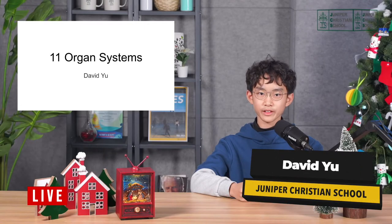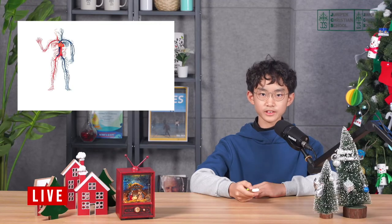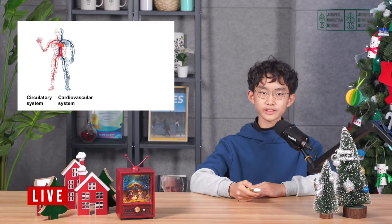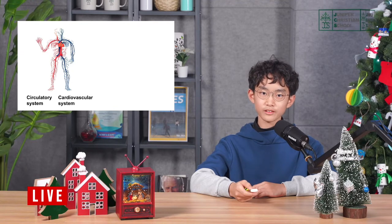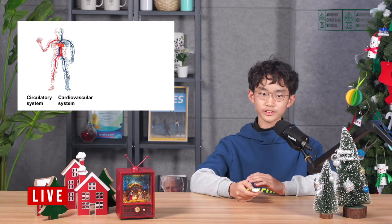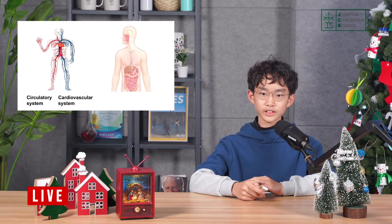Hello. My name is David Yu and I want to talk about 11 organ systems. The first system is the circulatory system, also known as the cardiovascular system. This system helps circulate your blood and carries nutrition and oxygen throughout your body.